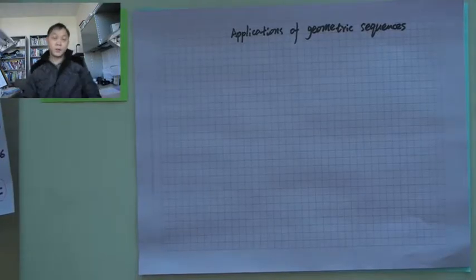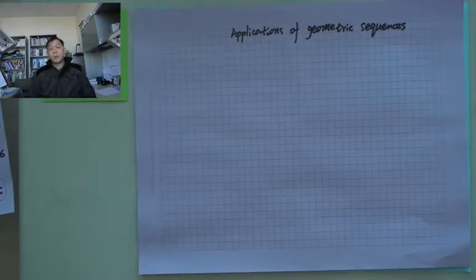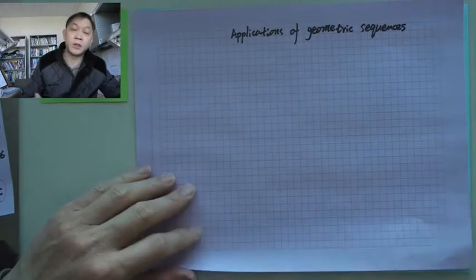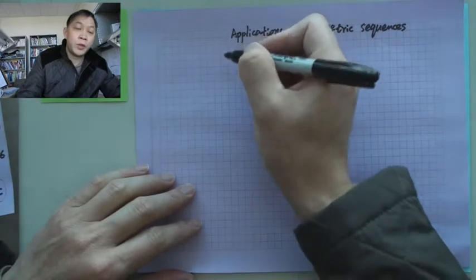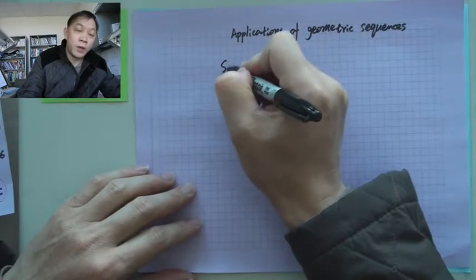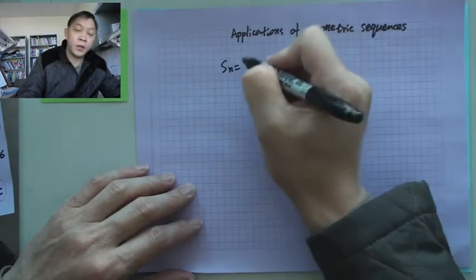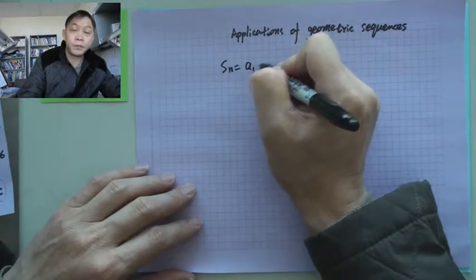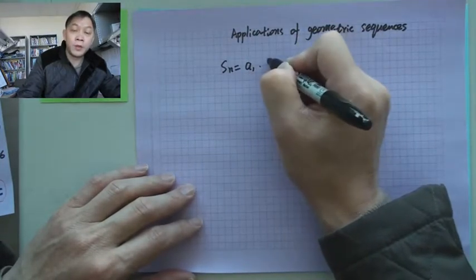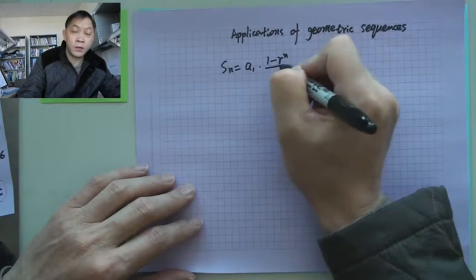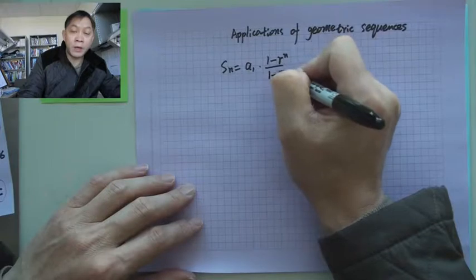In this lecture we will talk about applications of geometric sequences. We know the sum formula for a geometric sequence is the initial term a₁ times 1 minus r to the n divided by 1 minus r.